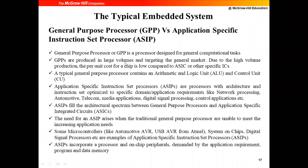When I say general purpose, it can be used in different types of applications. Consider your desktop system — you're using the Zoom app, but in the same system you can open a Word document, a Paint document, or run various simulators. It is used for general purpose. A typical general purpose processor contains only an ALU (Arithmetic Logic Unit) and a Control Unit.